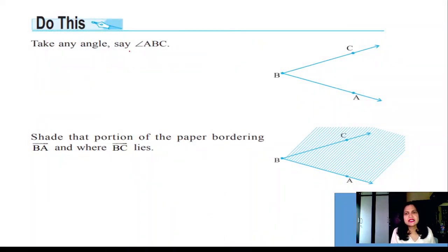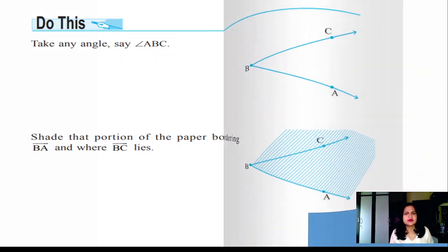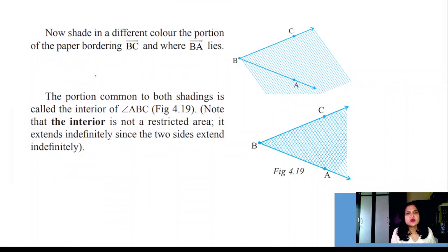Do this: Take any angle, say ABC. The shaded portion of the paper bordering BA and BC lies here. Now shade in a different color with different textures. The portion common to both these sides...